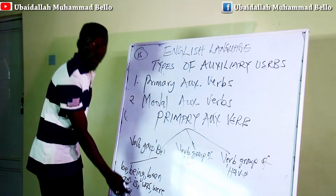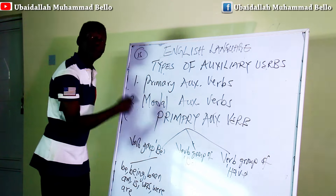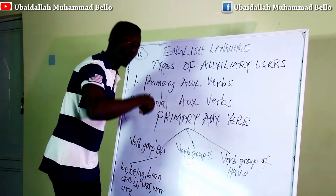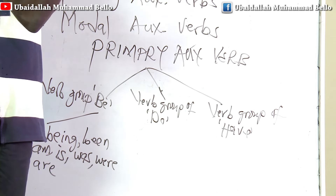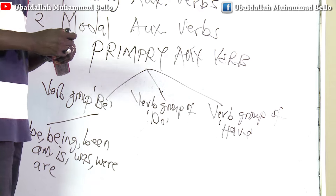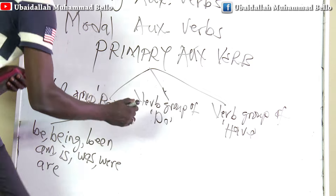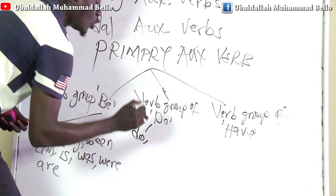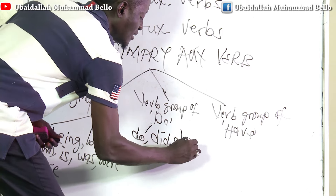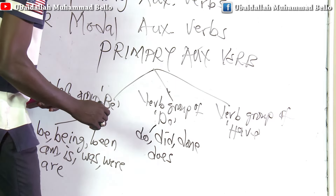These are all called primary auxiliary verbs under the verb group of BE. Then we have the verb group of DO. There are either three or four items, depending on scholarly postulations. We have DO itself, DID, DONE, and some scholars would also include DOES.